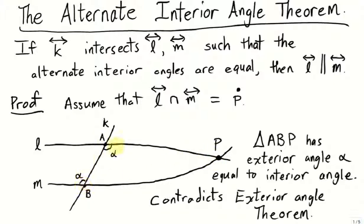However, this angle is not greater, it's actually equal by hypothesis. This contradicts the exterior angle theorem, which means our initial assumption that the two lines intersected at a point P is false.